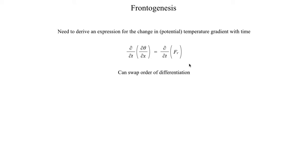To start, we've got an equation for how something evolves with time. Something we need to do to get a more meaningful result is to swap the order of differentiation. Currently we're taking the time derivative of the x-derivative of potential temperature, but we need to reverse the order so that we take the x-derivative of the time derivative of potential temperature. Mathematically that is represented as the derivative with respect to x of dθ/dt.